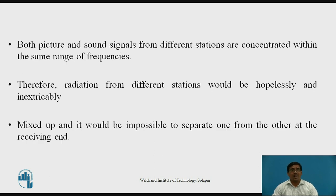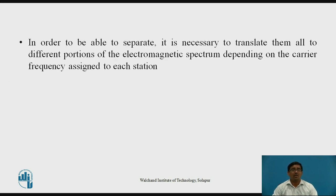Both picture and sound signals from different stations are connected within the same range of frequencies. Therefore, radiation from different stations would be hopelessly and inextricably mixed up and it would be impossible to separate one from the other at the receiving end. That's why this is another reason we require modulation — in order to separate signals, it is necessary to translate them to different portions of the electromagnetic spectrum depending on the carrier frequency assigned to each station.